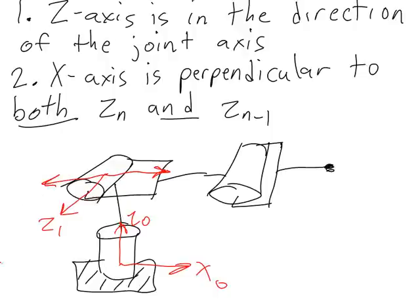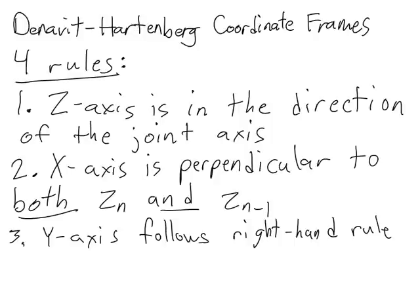I can choose whichever direction I want for the x-axis. In this case, I might choose the direction going to the right, and I'll call that x1. I've now satisfied both rule 1 — that the z-axis must be in the direction of the joint axis — and rule 2 — that the x-axis must be perpendicular to both zn and zn minus 1 for these two joints. I haven't yet drawn the y-axis, which is defined by rule 3. The third rule, also seen before, is that the y-axis follows the right-hand rule, now that we've defined the x-axis and the z-axis.